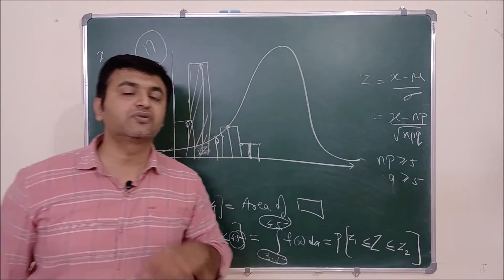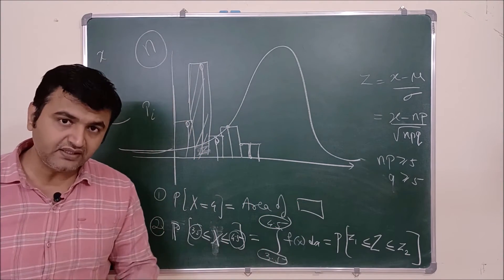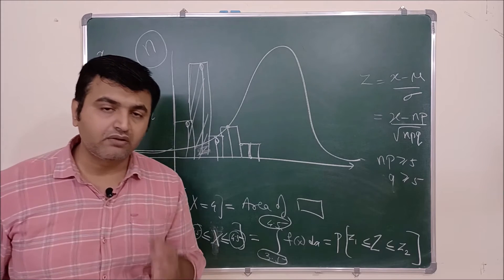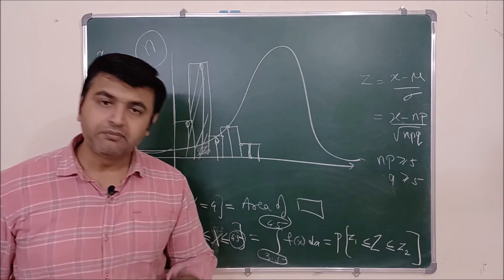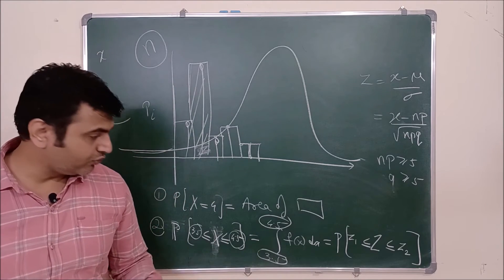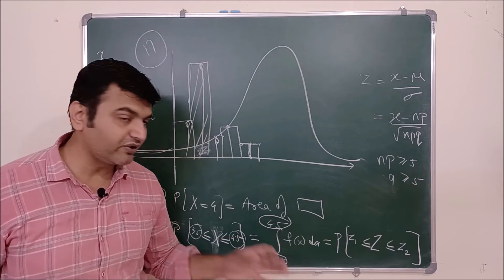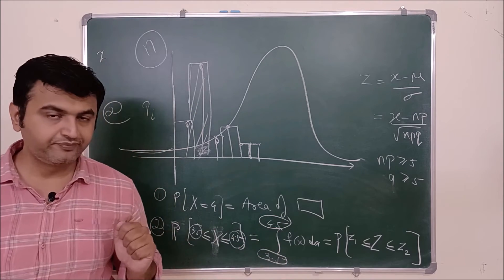So under these three conditions, you can think of using the normal distribution whenever you have a question on binomial distribution. And don't forget to take this increment and decrement of 0.5.